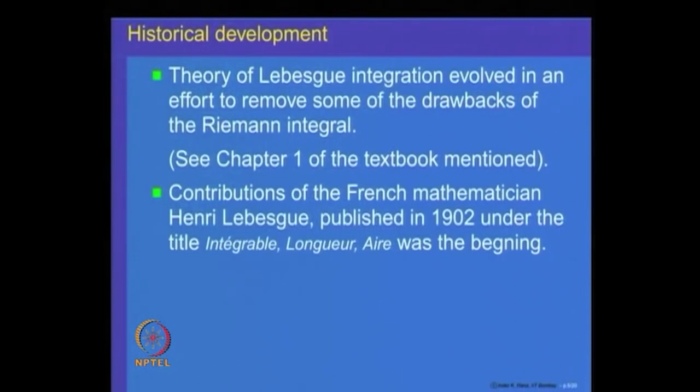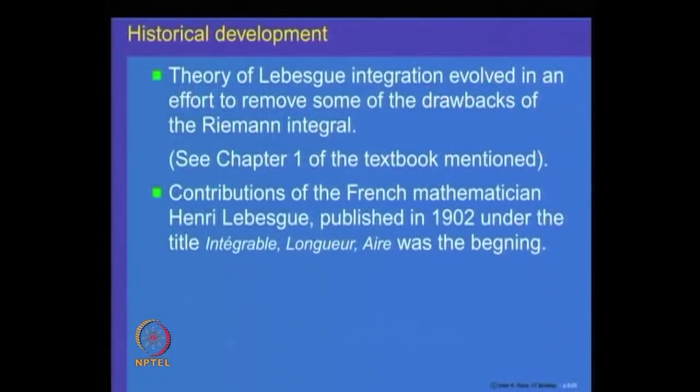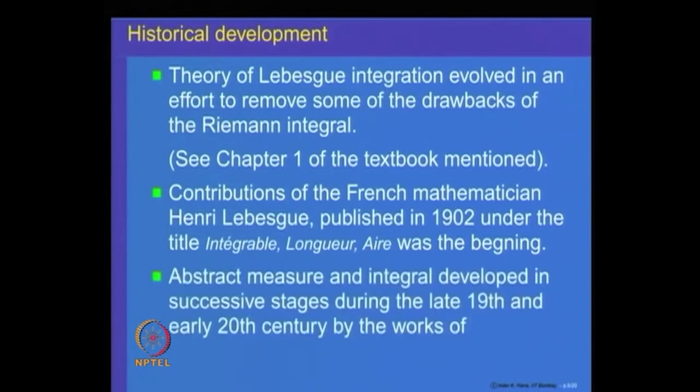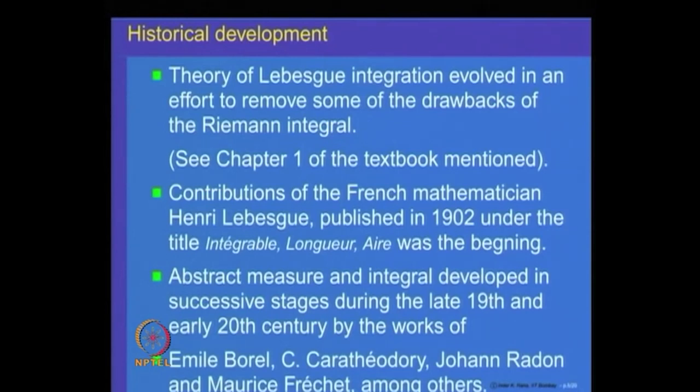Why is Lebesgue integration needed? There are drawbacks of Riemann integration — to study them, look at Chapter 1 of the textbook. Historically, this theory was developed by the French mathematician Henri Lebesgue, who published it as part of his PhD thesis in 1902. It was further developed into abstract spaces by mathematicians in the 19th and 20th centuries, including Emile Borel, Carathéodory, Radon, and Fréchet, among others.